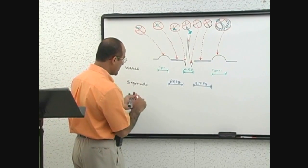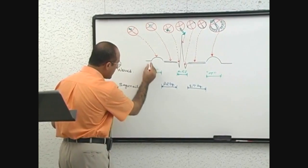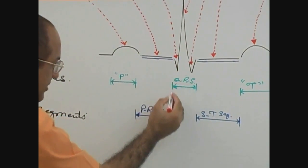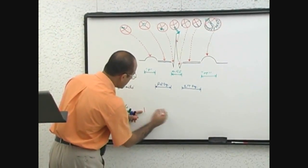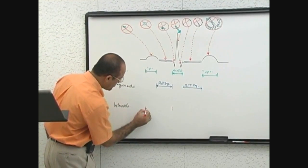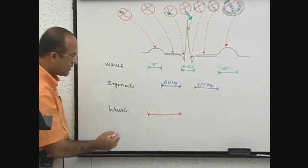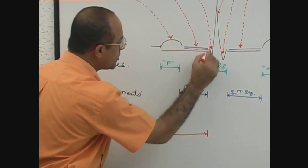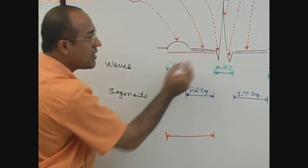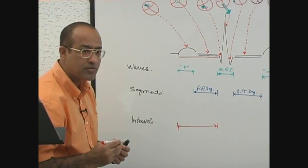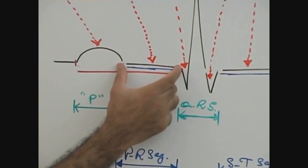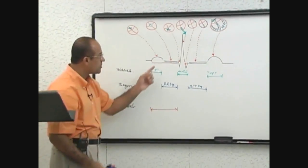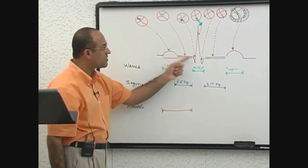If we measure from the beginning of the P wave up to the beginning of the QRS complex, this duration is called the PR interval. You must know the difference between PR segment and PR interval. The PR segment is only the isoelectric line, but the PR interval includes the P wave — that is, PR interval equals the P wave plus the PR segment.